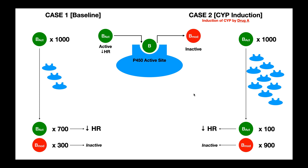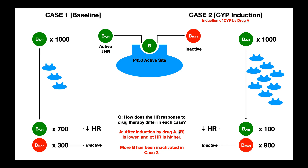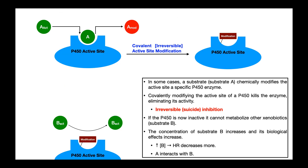Drug A clearly interacts with drug B. Without drug A, only 300 of the 1000 drug B molecules are metabolized, leaving 700 active. With drug A and induction, 900 molecules of drug B are metabolized, leaving only 100 active. After induction, the active concentration of drug B is much lower, so the patient's heart rate will be higher because there's a smaller decrease in heart rate. Drug A can induce the production of more cytochrome P450s, meaning drug B will be metabolized more and there will be less activity of drug B than expected. When drugs are administered, we must watch out for this induction effect as well as both irreversible and competitive inhibition effects.